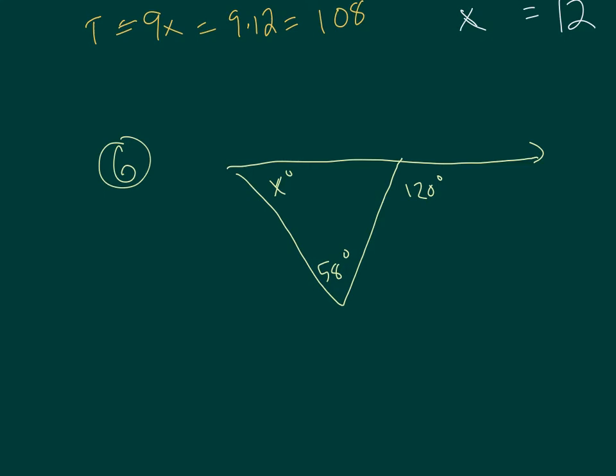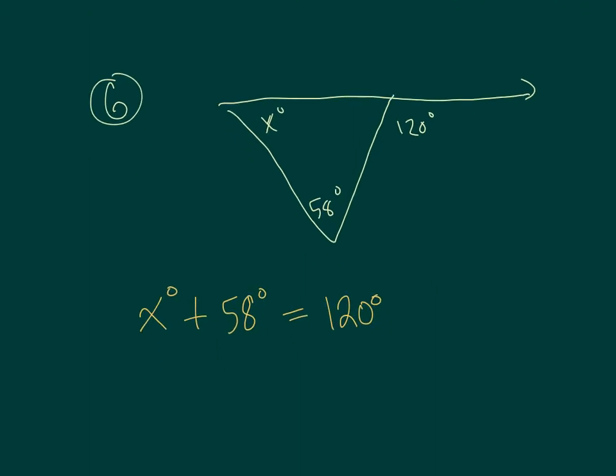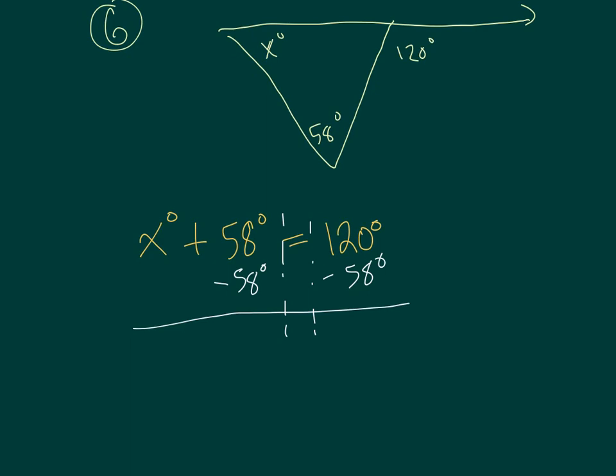So let's set up an equation. Imagine x plus 58 is equal to 120 degrees. And from there we can simply solve for the value of x. So subtract 58 from both sides. Bring that x down, and x is equal to, borrow, borrow again, 62 degrees. There you go. So x equals 62 degrees. Not too bad.